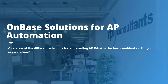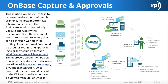One solution we offer is OnBase Capture and Approval. This solution uses OnBase to capture the document via scanner, email, fax, EDI, or sweeps. Once captured, we run those through Brainware by Hyland, which automatically classifies the document and populates keywords such as invoice number, PO number, and line items. Once processed, it goes through a workflow for routing — either standard workflow or the Workflow Approval Management. I'm going to show a small demo of how the Workflow Approval Management works.